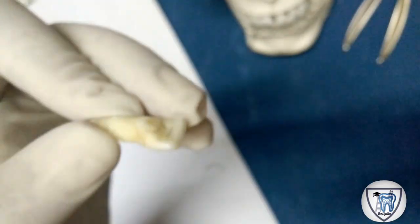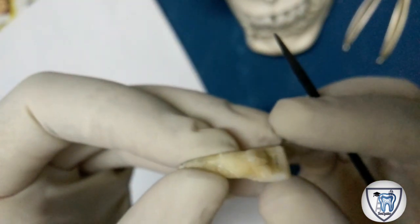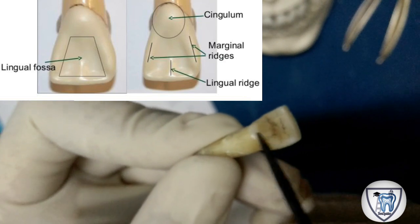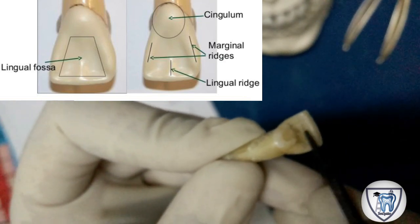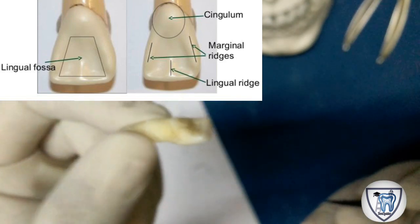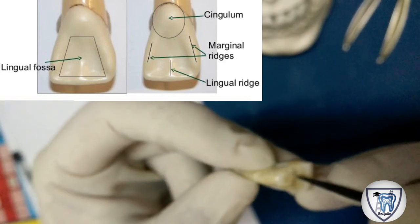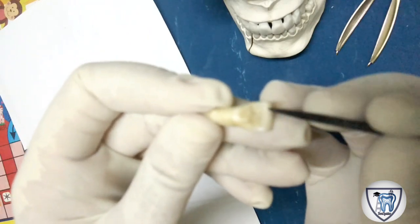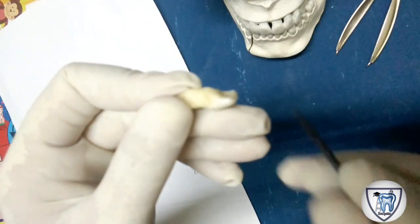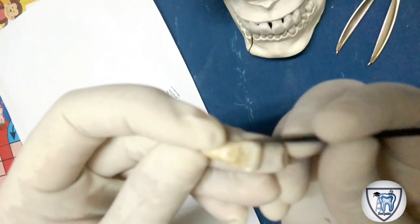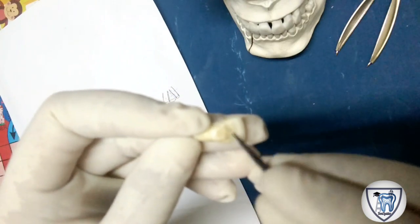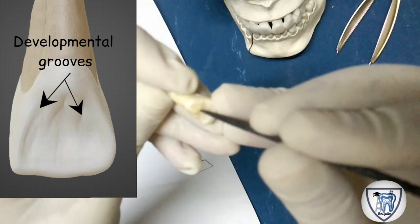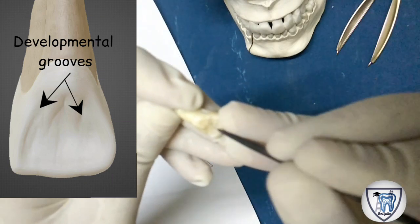From the lingual aspect, the tooth is convex in the cervical third area — this convexity is called the cingulum — and the middle third and incisal third are concave, giving the tooth a scoop or spoon-like structure. This concavity is called the lingual fossa. The boundaries of the lingual fossa are: the distal marginal ridge, the mesial marginal ridge, the incisal ridge, and the cingulum area. Some developmental grooves run from the cingulum towards the incisal area; grooves are shallow depressions.